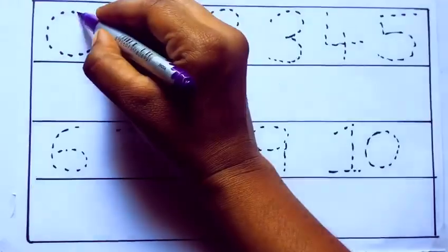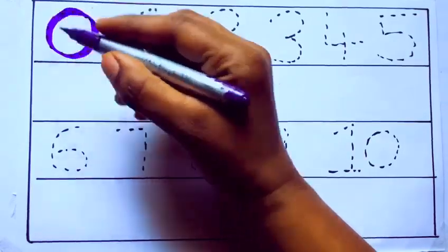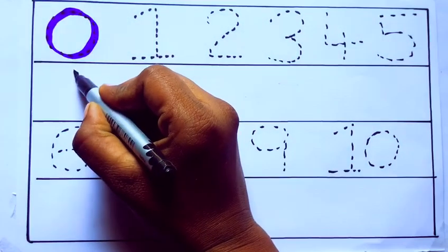Let's draw numbers. Violet color 0, Z-E-R-O, zero.